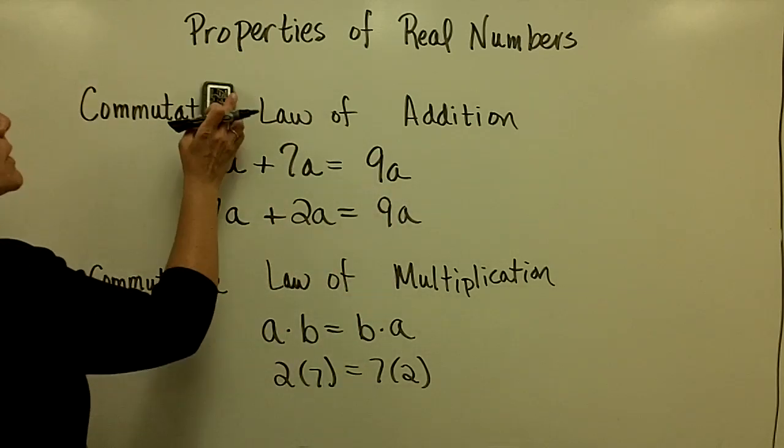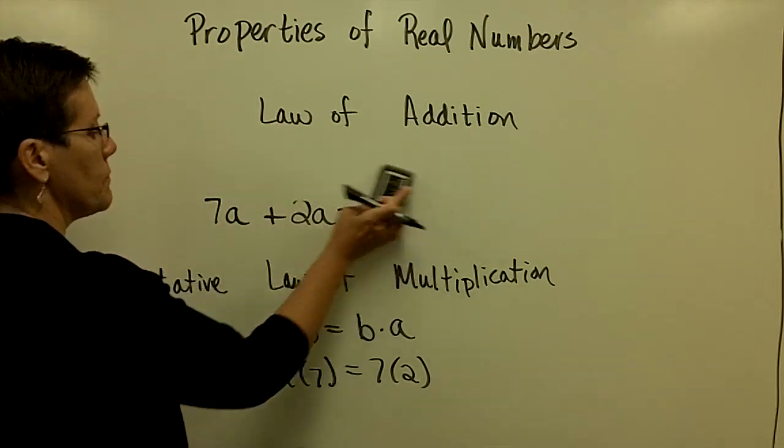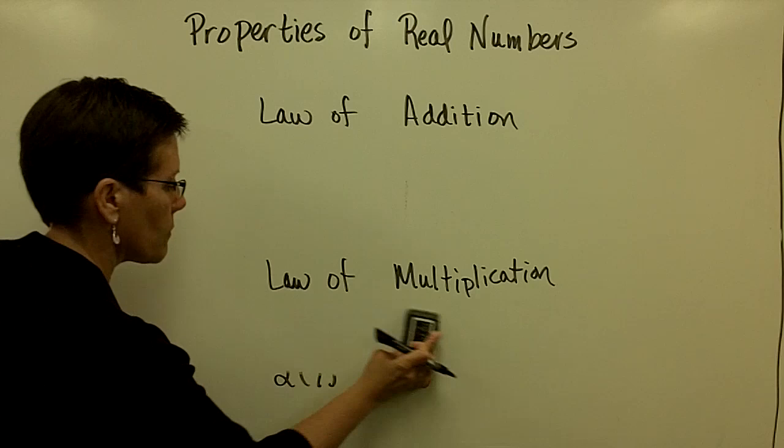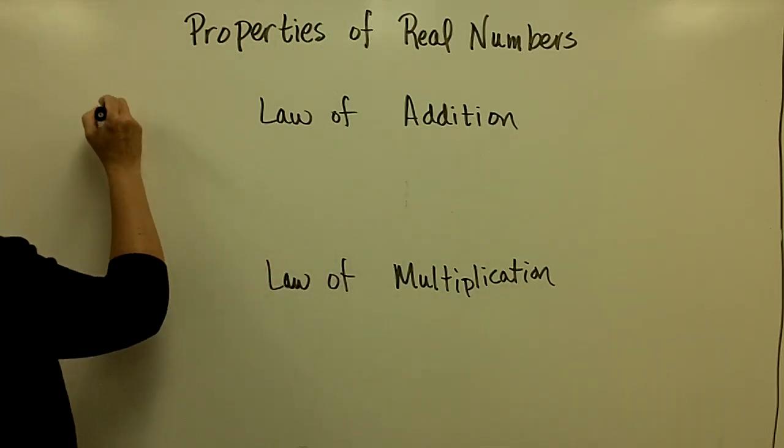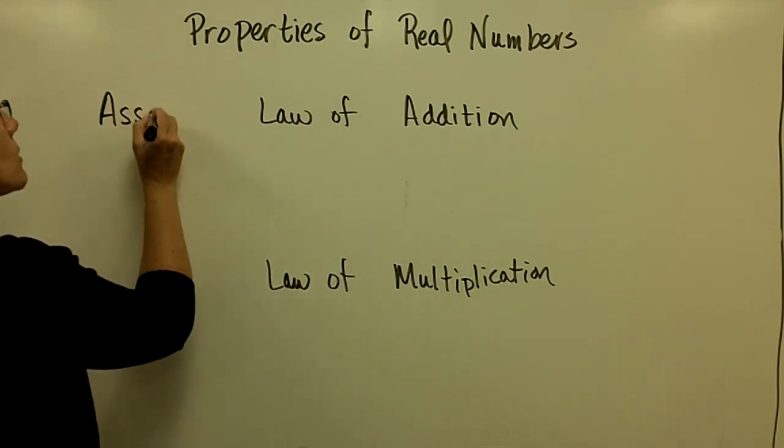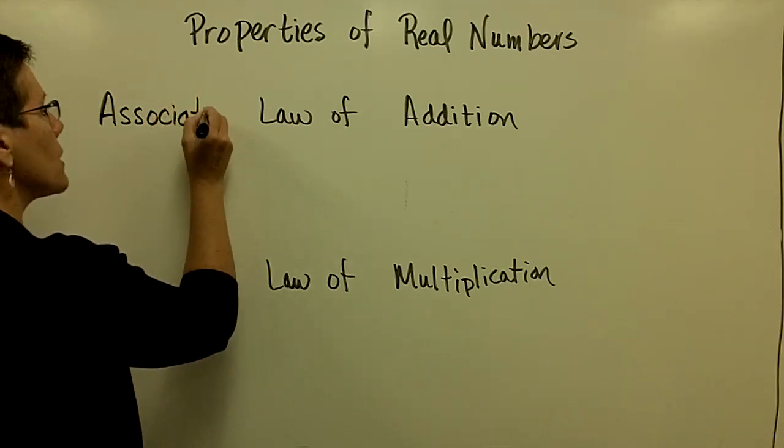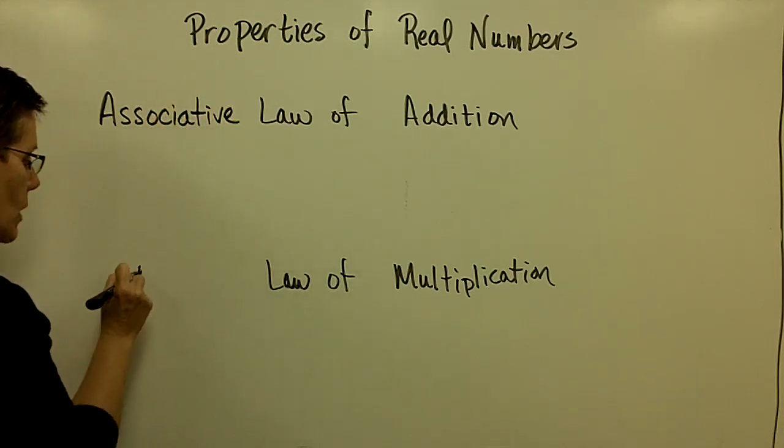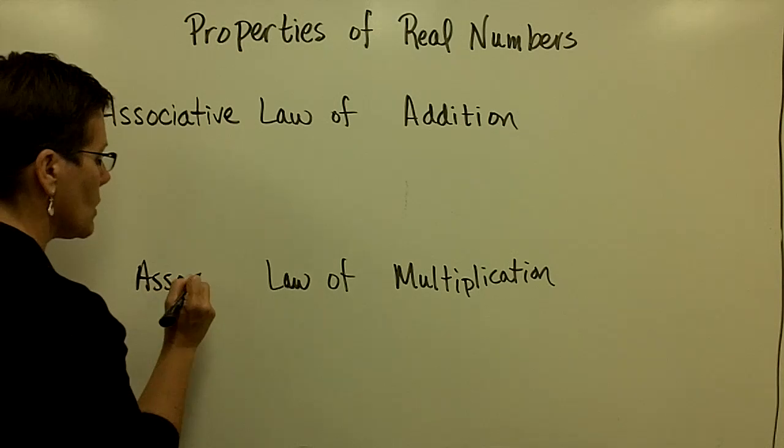The next law is called the associative laws. I'm going to try to abbreviate that quickly. So the associative, I'll write this one out full here, of both addition and multiplication.